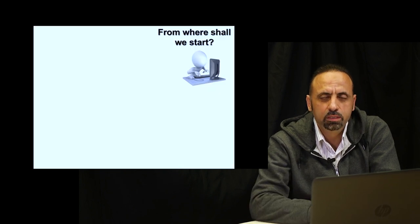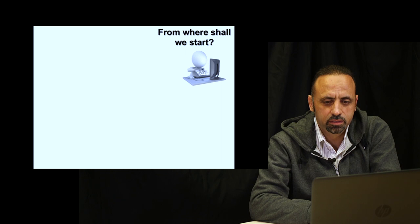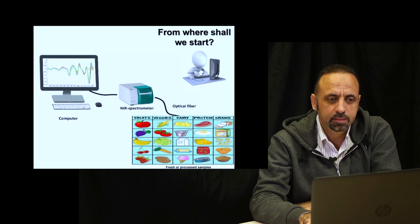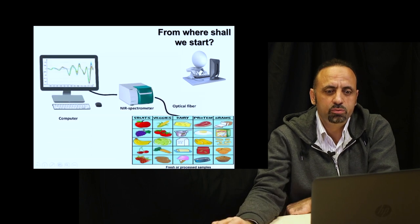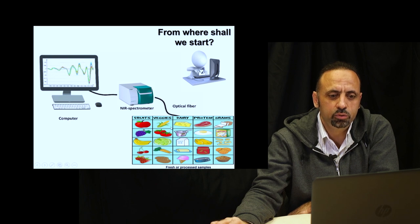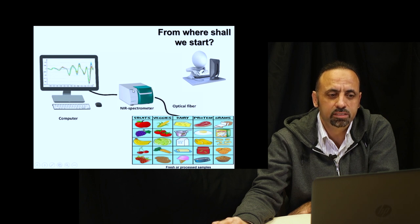Where shall we start? First, you need to have spectral data in your hand. You have to obtain some samples, whether these samples are fruits, vegetables, solids, or liquids. Then you introduce these samples inside the near infrared spectrometer and the data transfer directly to the computer, and then you have spectral data.